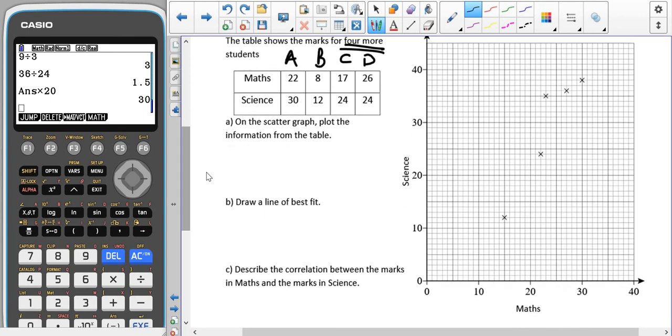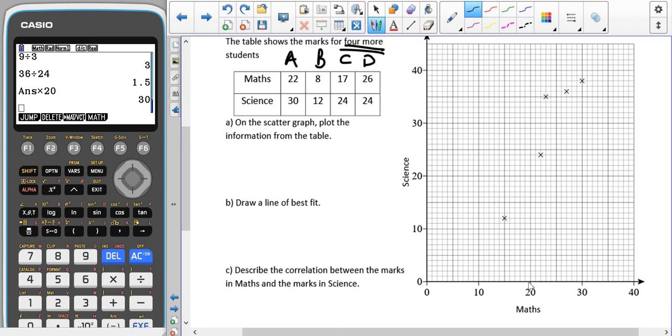So usually you'll either be given the full scatter diagram already given to you or you'll just have to add a few points on like we do here. For this pupil that I've labelled A, they've got 22 in maths, so 20, 1, 2. Because there's 10 squares between 0 and 10, each little square is worth 1. And they've got 30 in science, so that's going to put their mark there. For the next person, 8 in maths and 12 in science puts their mark there. 17 in maths, 24 in science, that puts their mark there. And then 26 in maths, 24 in science puts their mark there.